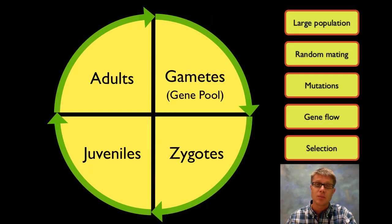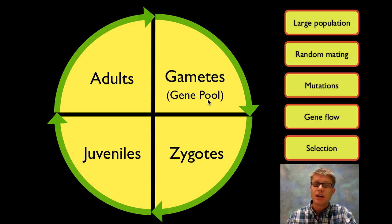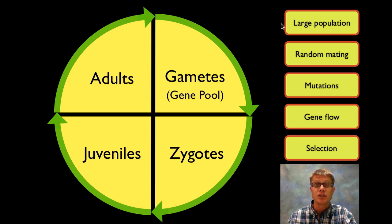Since we're talking about a population, if we look at all the genes in that population we call that a gene pool. That gene pool should remain unchanged through time unless we violate one of the five rules of Hardy-Weinberg equilibrium. We have to have a population that's big enough, we have to have random mating, no mutations, no gene flow, and no selection. If we satisfy all of those conditions, the gene pool will remain the same.